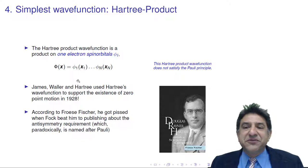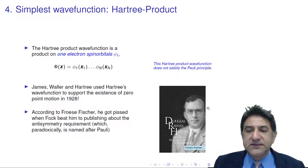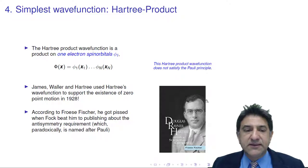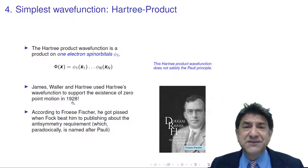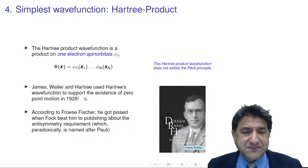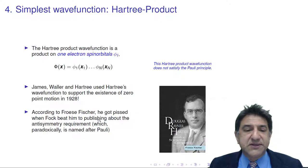Now, let me say a few things about this. This is Hartree here, Douglas Hartree, quite an impressive guy. He used this kind of wave function to support the existence of zero-point motion in 1928, only a few years after Schrödinger had derived his equation. So according to Froese Fisher, Charlotte Froese Fisher, he got a little bit pissed off when Fock beat him to publishing about the anti-symmetry requirement, the Pauli principle.